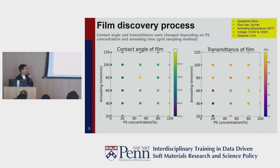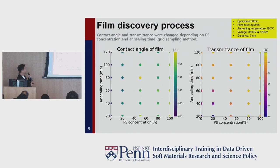Before starting the semi-autonomous experimentation, we collected initial data based on PS concentration and annealing time. For transmittance, as expected, increasing annealing time resulted in higher transmittance. However, for the contact angle, the highest contact angle was observed at 50% PS concentration. For this simplified experiment, we fixed the PS concentration and conducted the semi-autonomous experimentation to optimize the annealing time.